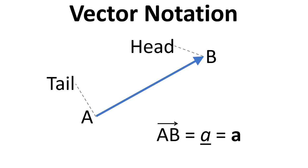If we were to write this down, you may see this vector written down as AB with an arrow across the top, or it might just be written as A, that's italic and underlined, or you might just see it written as A in boldface.